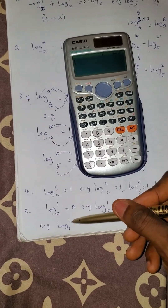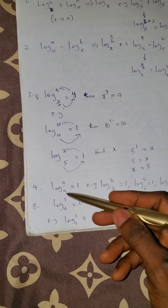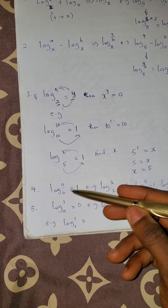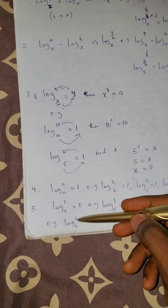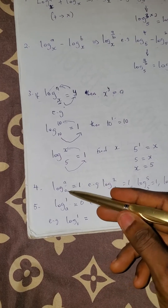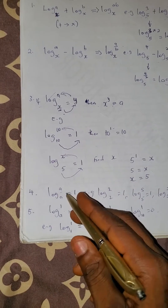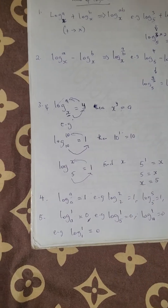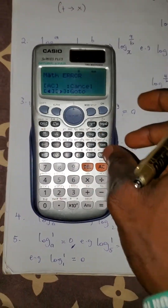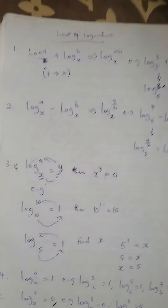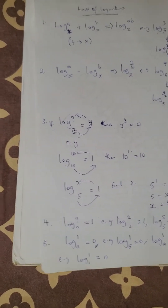Log 1 base 1 is peculiar to both laws — it satisfies log of a number to the same base equals 1, but it also satisfies log of 1 to any base equals 0. In this case, log 1 base 1 is zero. Take note: log 1 base 1 is zero.